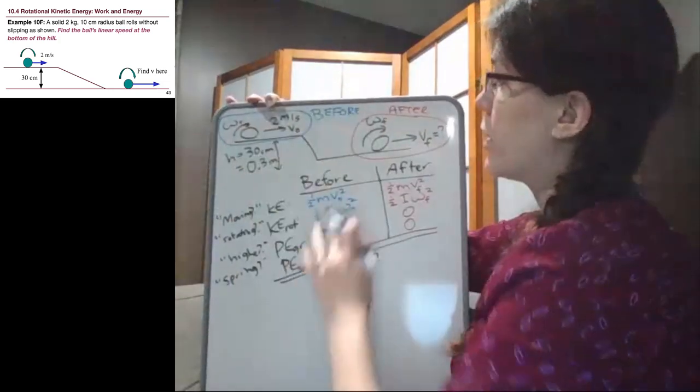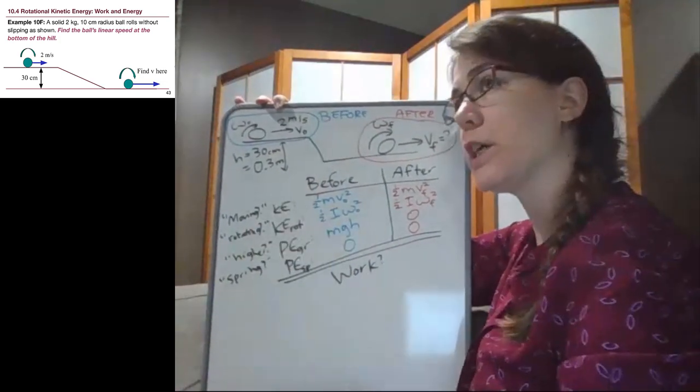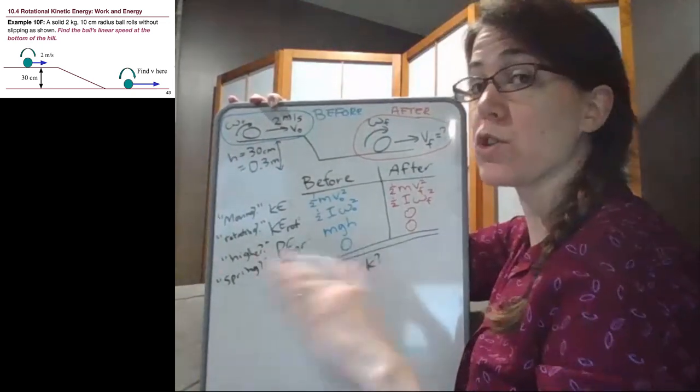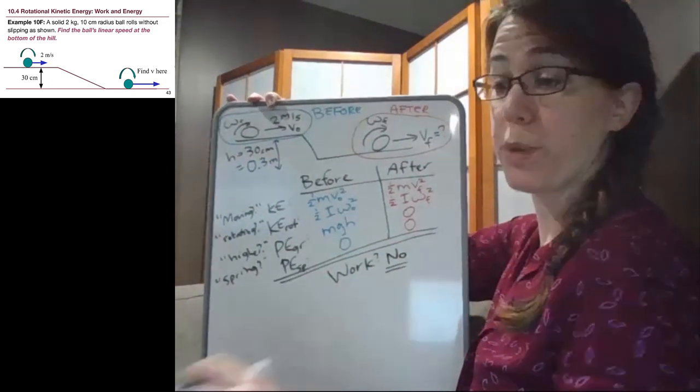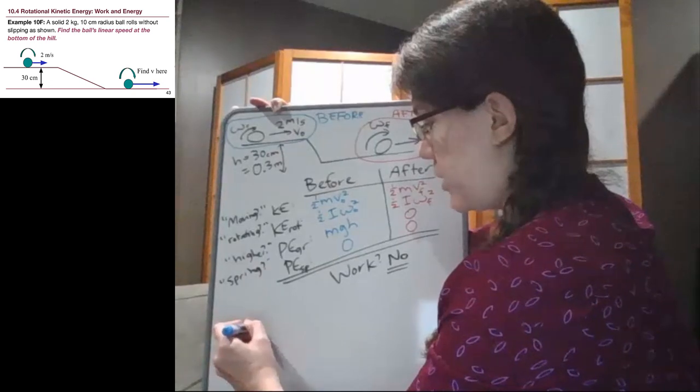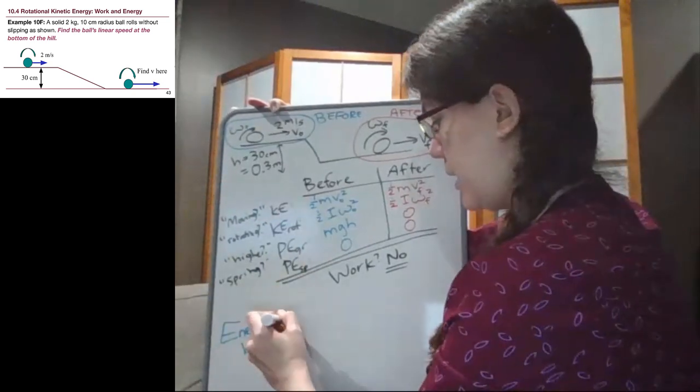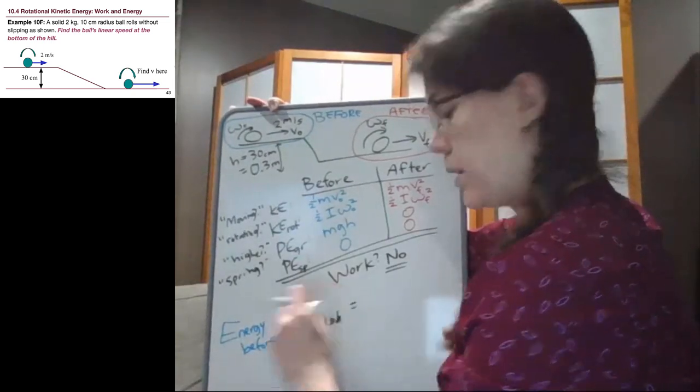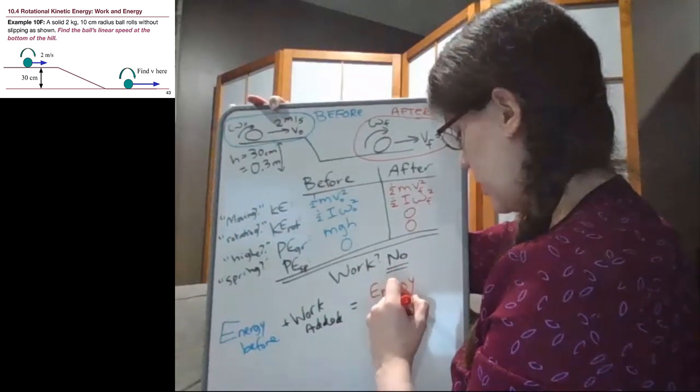We double check, is there a work term? We're looking for additional information about force, pushing or pulling, air resistance or friction. Because we don't slip, there's no energy lost to friction. Our work term would be no. So the original energy balance equation is energy before plus work added equals energy after.